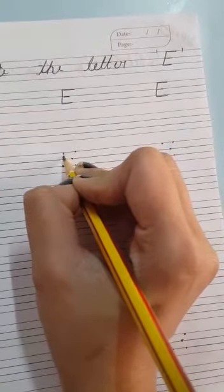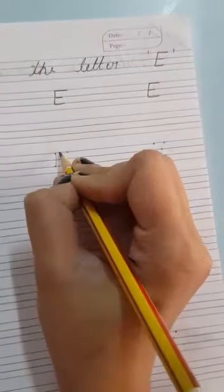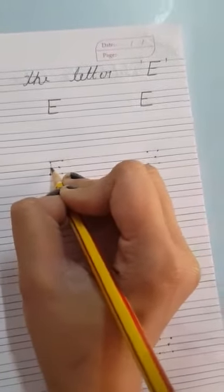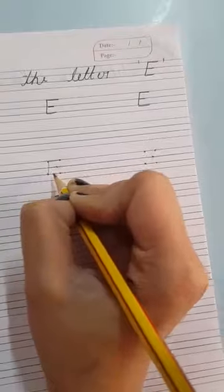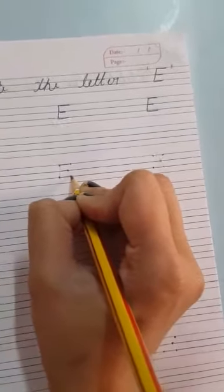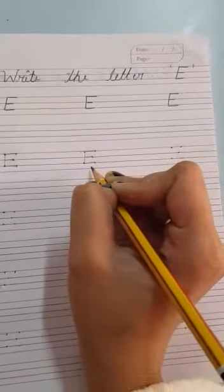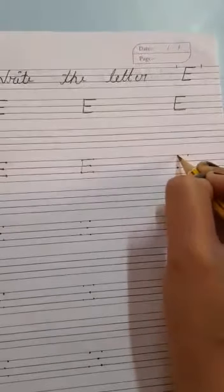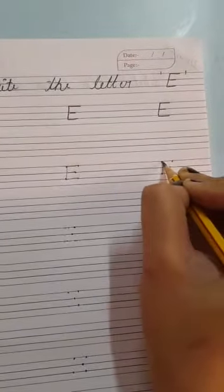First, we will make the standing line. Then, slipping. Then, again slipping. Then, again slipping. Letter E. E for elephant, egg, right?